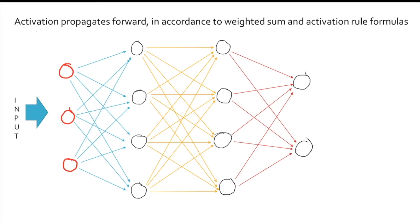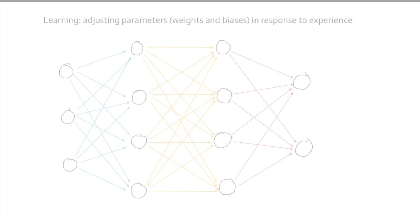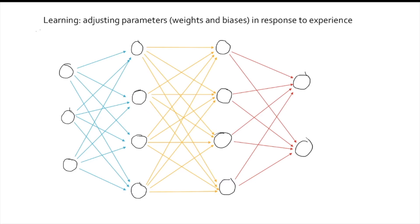In the typical artificial neural network, an input is presented and activation proceeds forward, in accordance with the weighted sum and activation rule formulas, from one layer to the next, ending with the output. One of the most important features of neural networks — perhaps their main feature — is that they are able to learn from experience, that is, from exposure to data. In neural networks, learning proceeds by adjusting the network's various parameters, which are its weights and biases or thresholds, depending on the case.